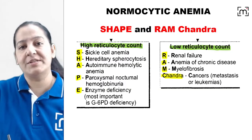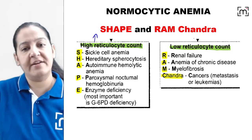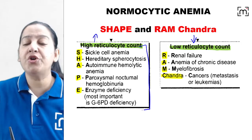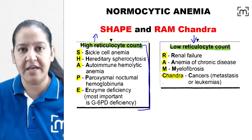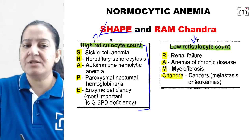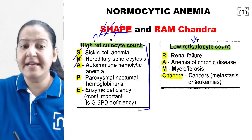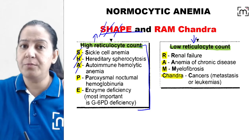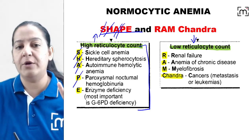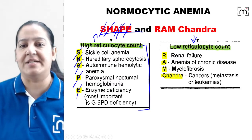Now coming to normocytic anemia, we need to see whether the reticulocyte count is high or low. If the retic count is high, it should be a hemolytic anemia. The mnemonic is SHAPE: S for sickle cell anemia, H for hereditary spherocytosis, A for autoimmune hemolytic anemia, P for paroxysmal nocturnal hemoglobinuria (PNH), and E for enzyme deficiencies like G6PD deficiency.